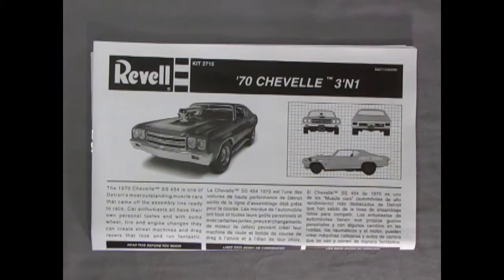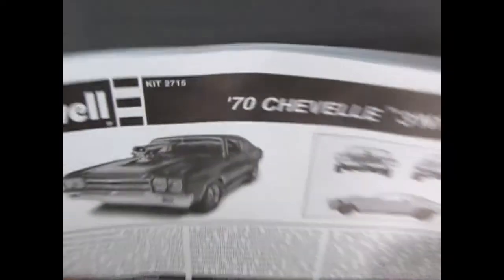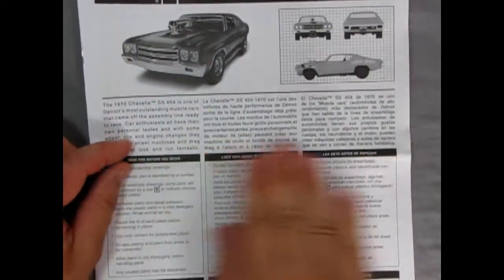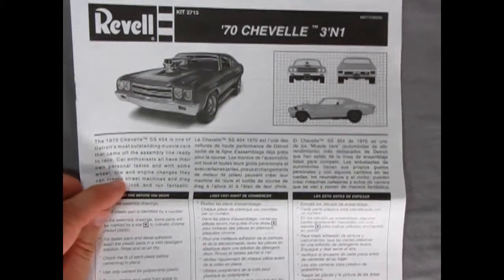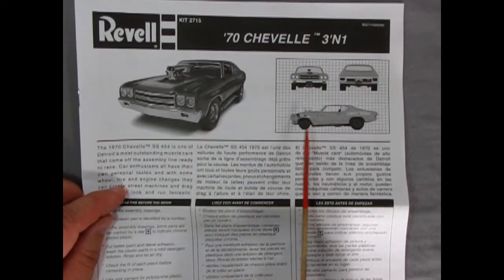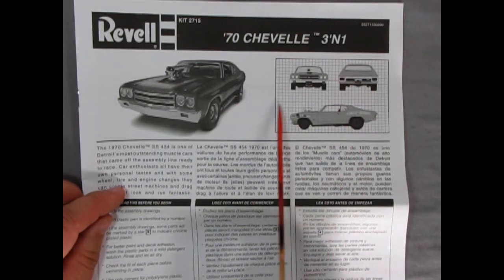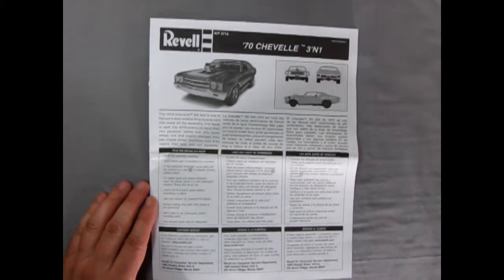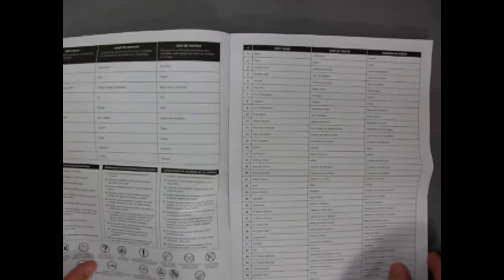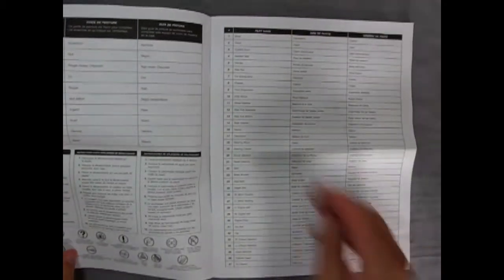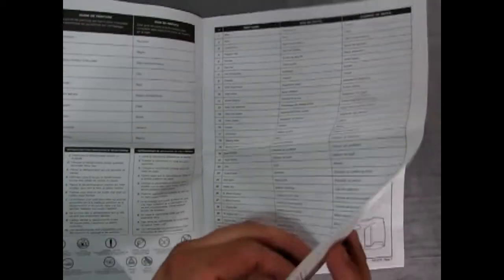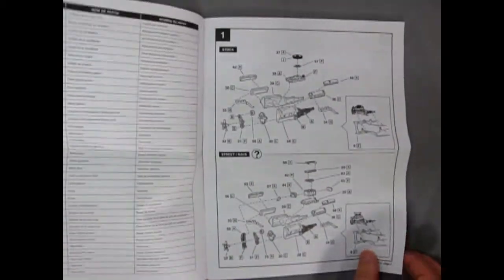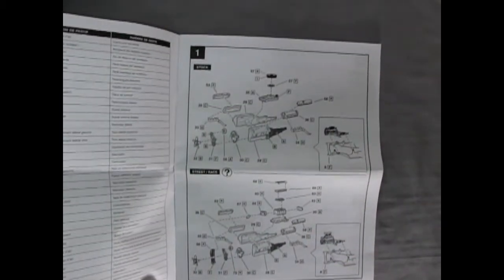To begin our review we have this nice fold out instruction sheet, which is quite large. You can see our 70 Chevelle built up model kit here, as well as the blue printed dragster version. So let's zoom back a bit here so we can see these instructions in full panel detail. To open them up we get all our paint callouts and the parts with the parts name.